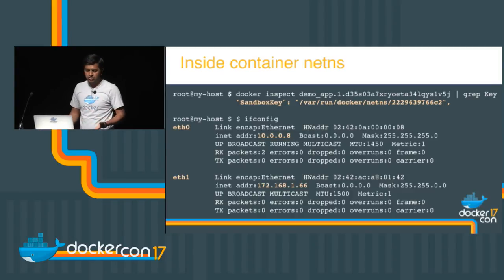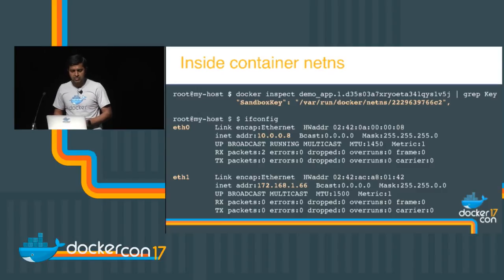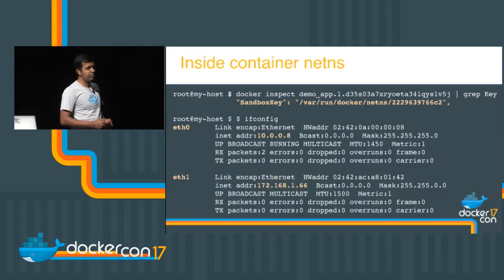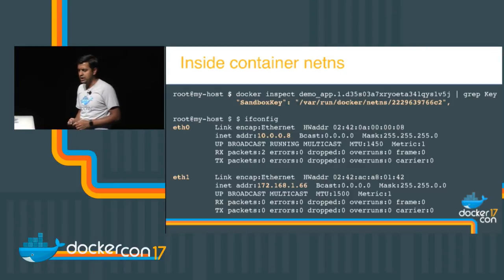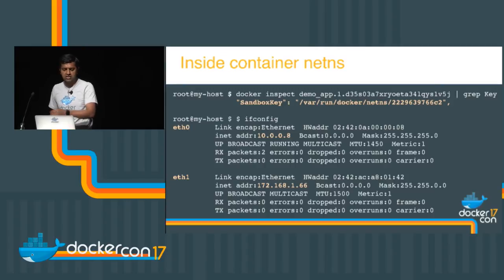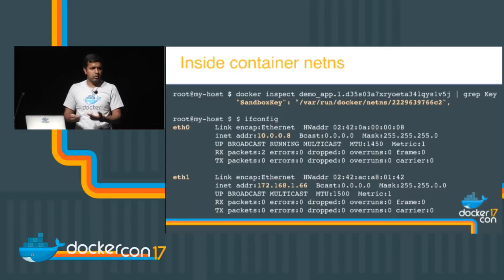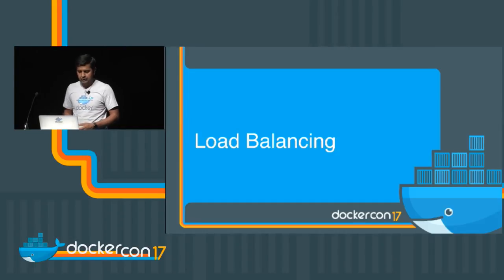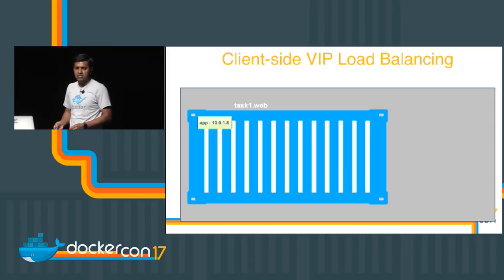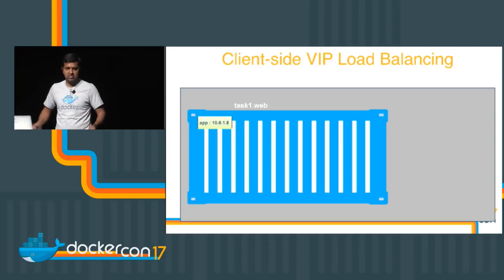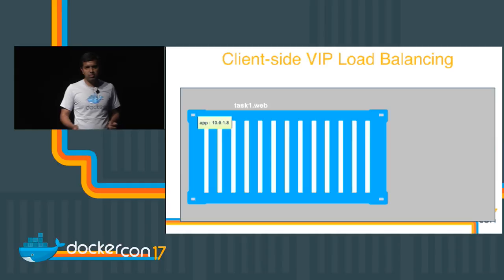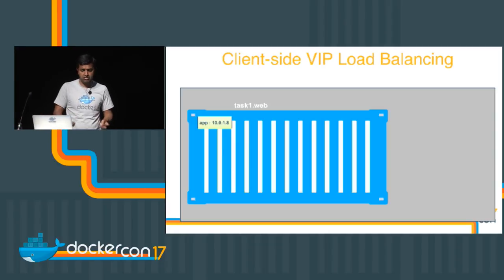To get inside the container namespace, do a docker inspect on the container and grep for 'key' — you'll see something called a sandbox key, which is the network namespace for the container. Do an NSEnter to get inside the namespace. Now you can see two interfaces: ETH0 for the overlay network and ETH1 for the default gateway bridge. Load balancing in Docker actually happens inside the container namespace today — it doesn't happen in the overlay namespace or the host namespace. It's client-side load balancing inside the container namespace.